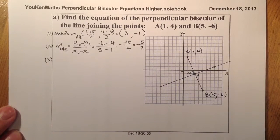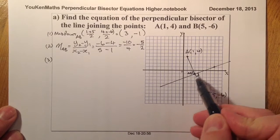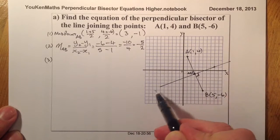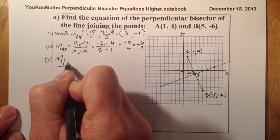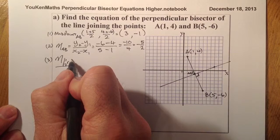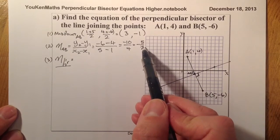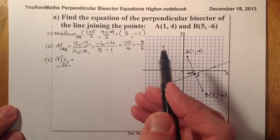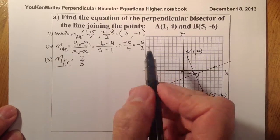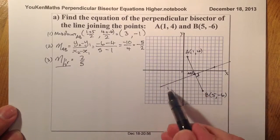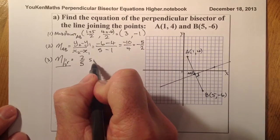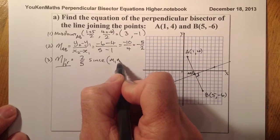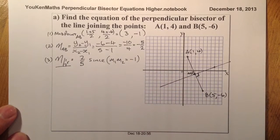The third step is finding the perpendicular gradient to that line. I'll flip and change the sign of the gradient. So if I flip minus 5 over 2 and change the sign to positive, the perpendicular gradient is 2 over 5. The reason is that two perpendicular gradients multiplied together give negative 1.